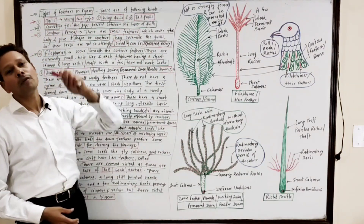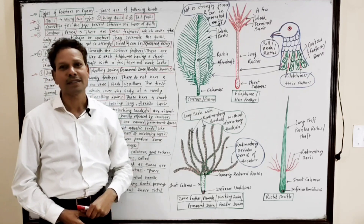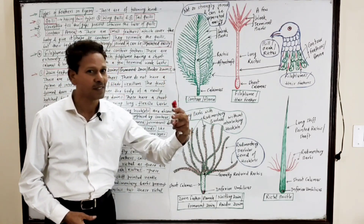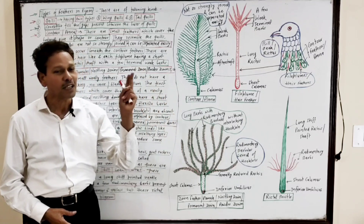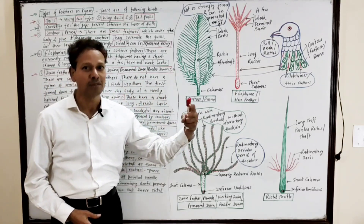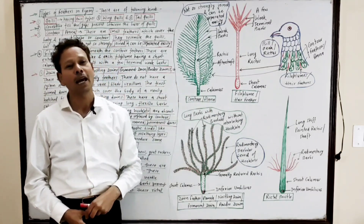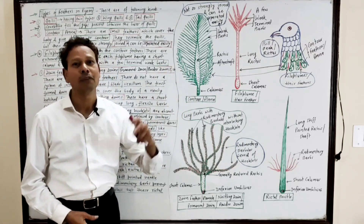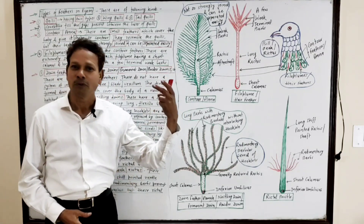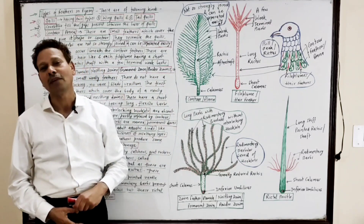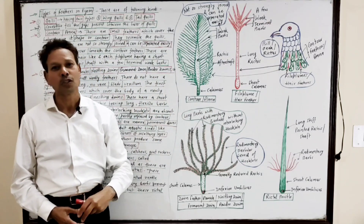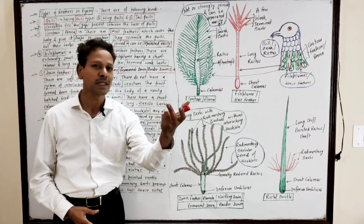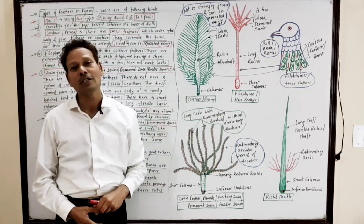The second type of feathers are coverts. As the name indicates, coverts cover the gaps. They fill the gaps present between the bases of wing quills and tail quills, producing a continuous area to oppose the buoyancy of air.